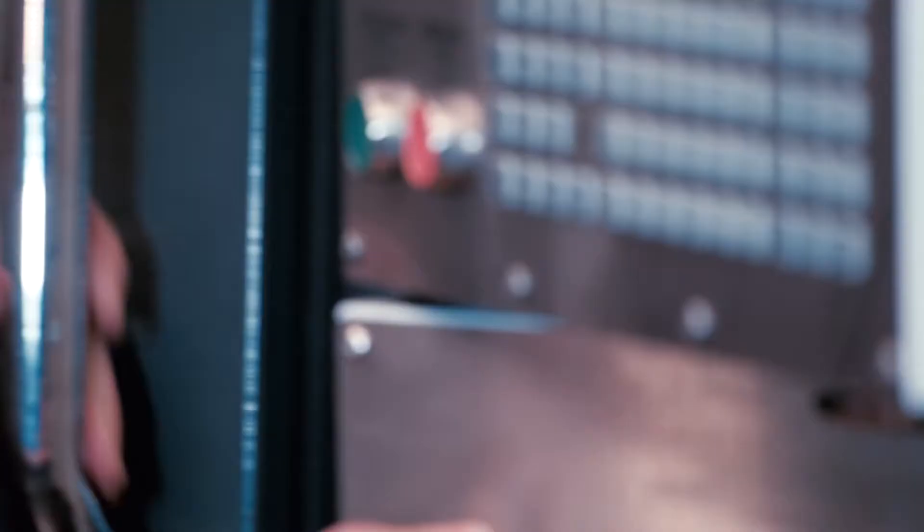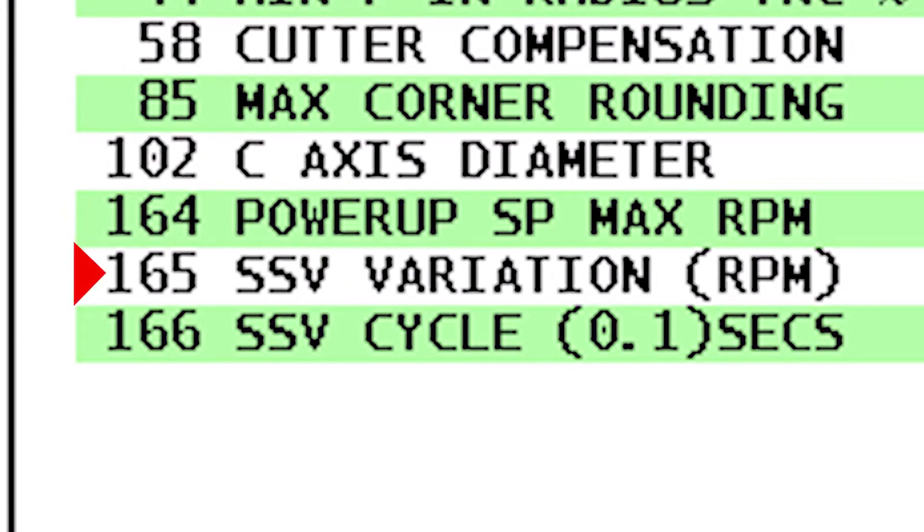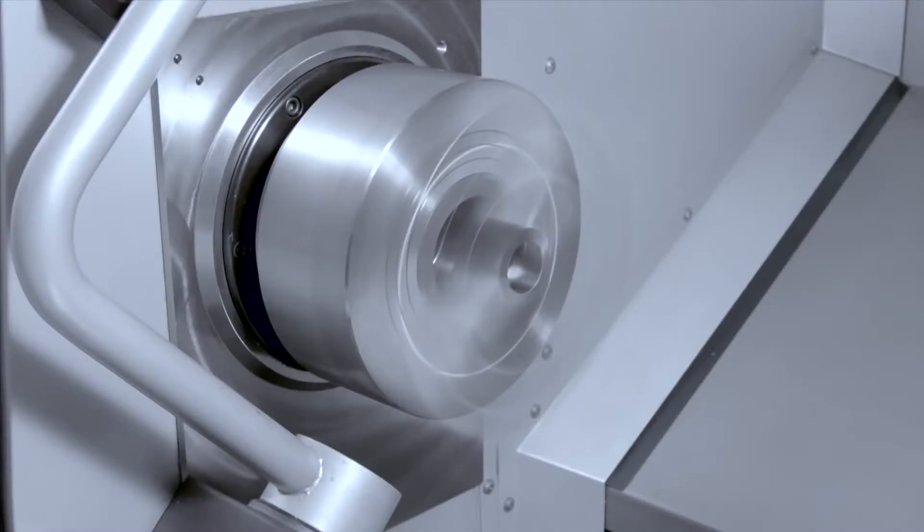Let's start up our spindle at 2000 RPM and let's turn on SSV. Our settings have SSV adding and subtracting 100 RPM from our speed continuously every 2 seconds. And we can hear the spindle speeding up and slowing down.